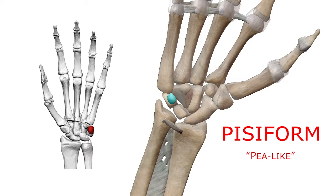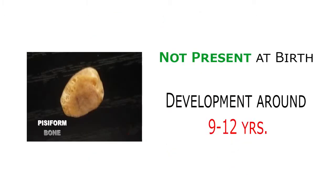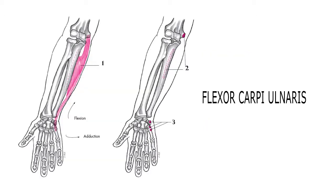Lastly, the medial-most is the pisiform bone, which is the Latin name for pea-like. Unlike the other carpal bones, the pisiform is a sesamoid bone — it is not present at birth but develops around the age of 9 to 12 years within the tendon of the flexor carpi ulnaris muscle.